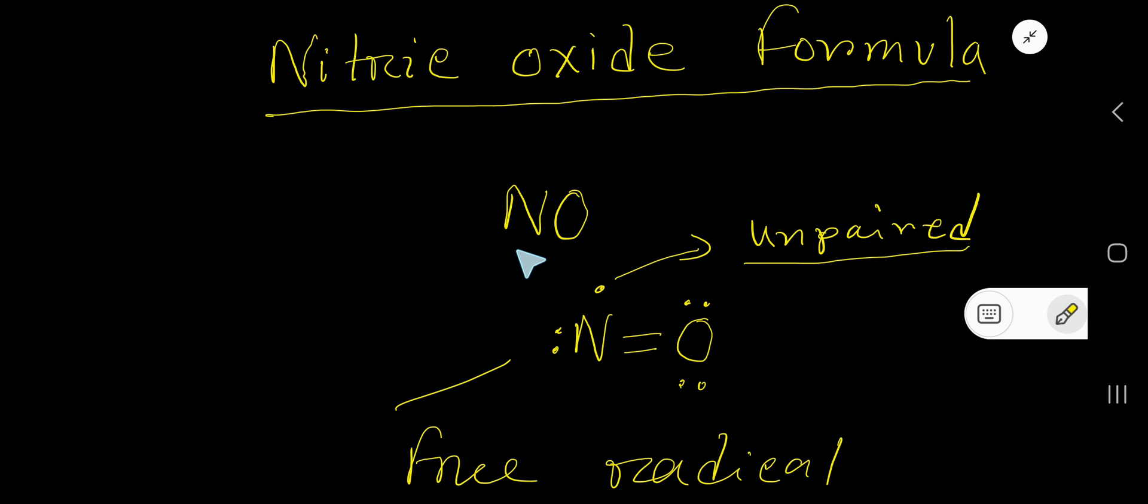Nitric oxide widens our blood vessels. As a result, our blood pressure is decreased. Additionally, it can relax our penis muscle and help with erections.